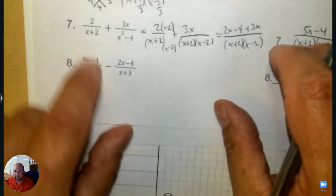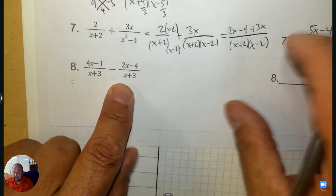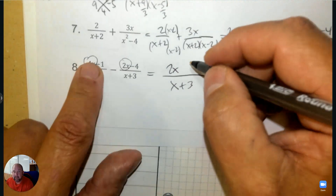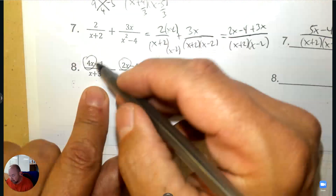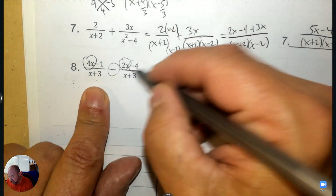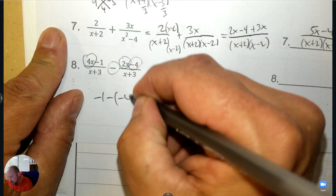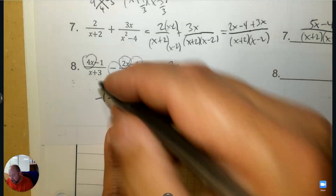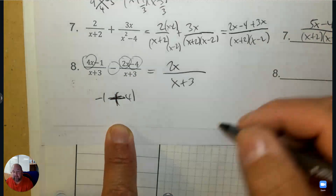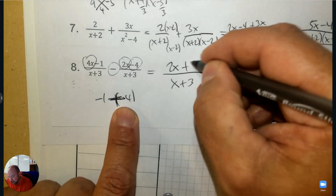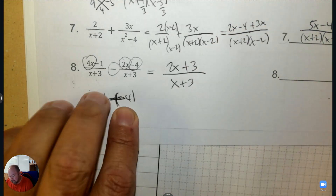The denominators are the same, so all I have to do is know how to subtract. 4x take away 2x is positive. Here's the tricky one: negative 1 subtract negative 4 — whenever you subtract a negative, it becomes adding. So it becomes negative 1 plus 4, that's positive 3. And there's your answer.